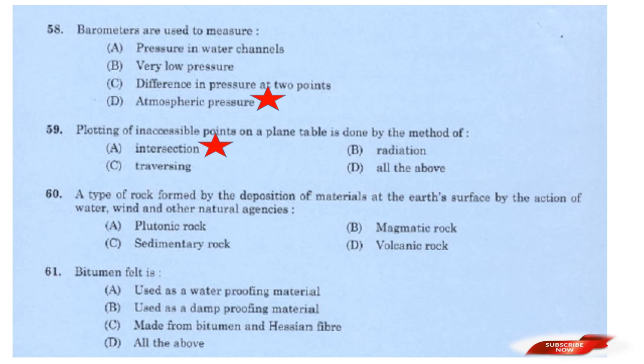Question: A type of rock formed by the deposition of material at the earth's surface by the action of water, wind and other natural agencies is? Options: Plutonic rock; Magmatic rock; Sedimentary rock; Volcanic rock. Answer: Option C — Sedimentary rock.